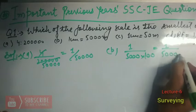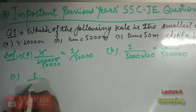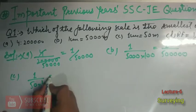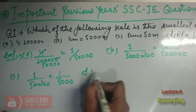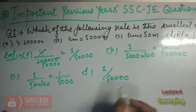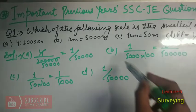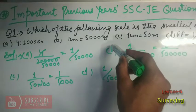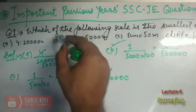For option B, RF will be 1 by 5,00,000. For option C, it will be 1 by 5,000. Option D is already given as 1 by 50,000. The trick to find the smallest scale is that it has the largest denominator, so option B has the largest denominator. Option B is correct.